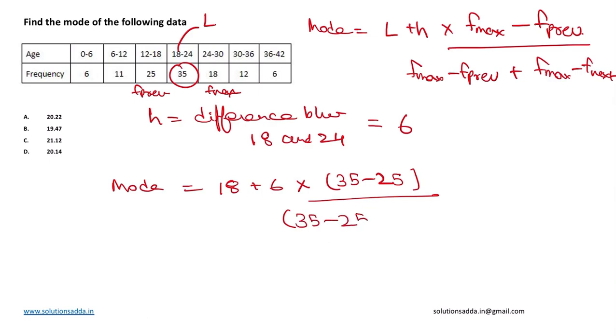It will be 18 plus 6 into 10, which is 60, divided by 10 plus 17. 18 plus 60 by 27 equals 18 plus 2.22.